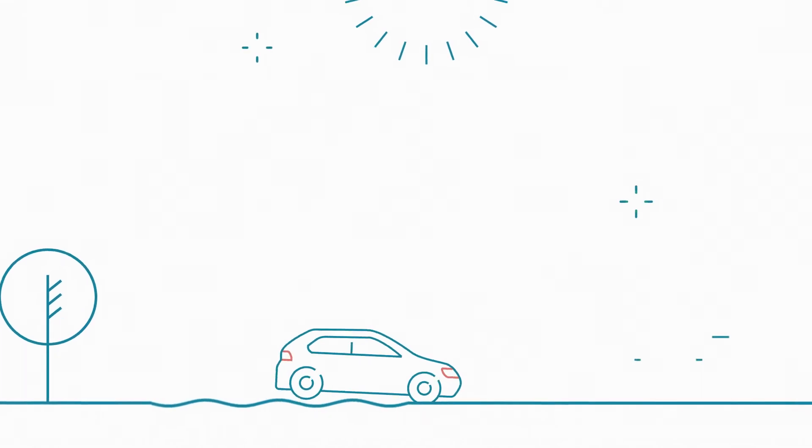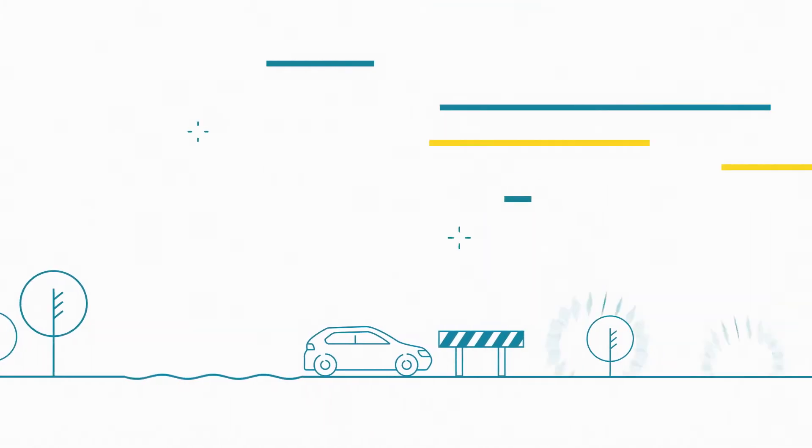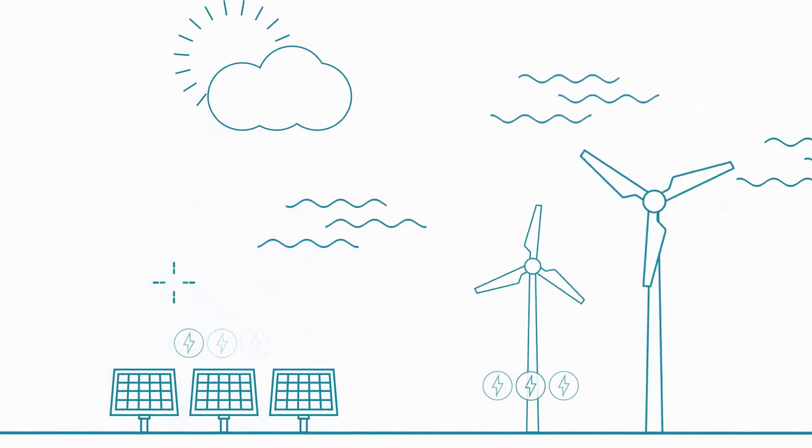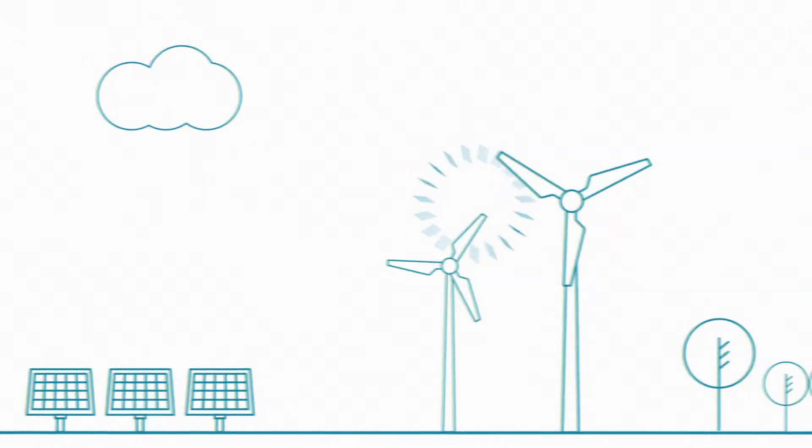But the road to a sustainable future is a bumpy one. While renewable energy is more sustainable, it's also unpredictable. Relying on the sun and wind means it's difficult to produce a consistent supply of energy.